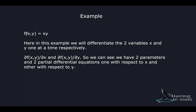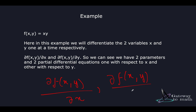We have a function f(x, y) equals x·y, with two parameters x and y. First we differentiate this function with respect to x, then with respect to y. The representations become ∂f/∂x and ∂f(x,y)/∂y respectively.